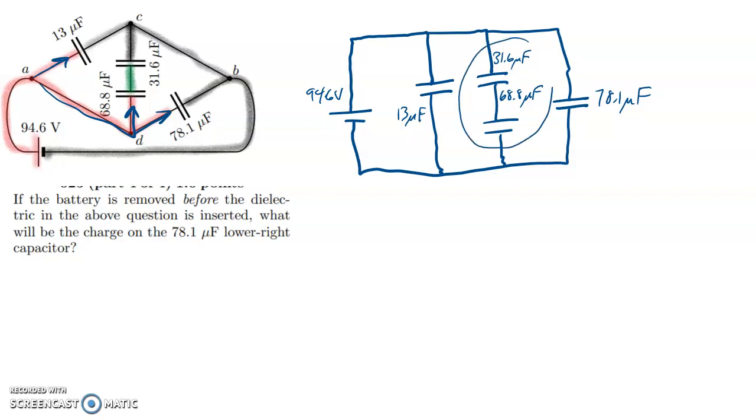So I'm going to have to find the equivalent capacitance first. First thing I'm going to do is combine these two in series. So I have my calculator here, 31.6 reciprocal of that, 68.8, the reciprocal of that. Add them together and take the reciprocal of that. And when I do that, I get 21.65 microfarads.